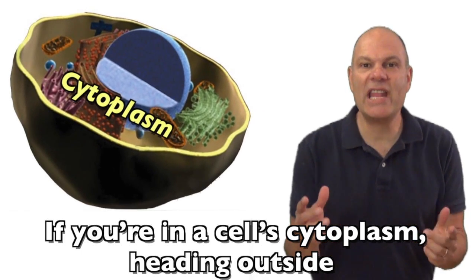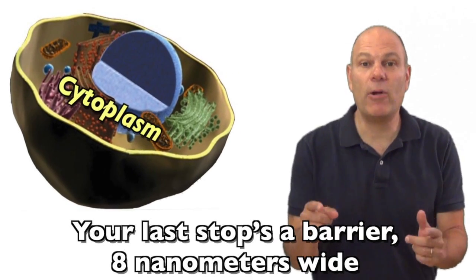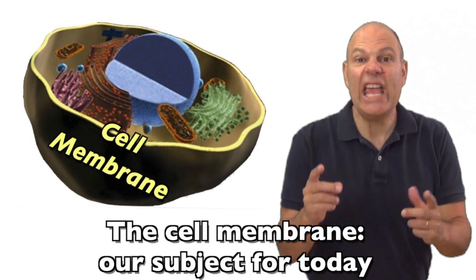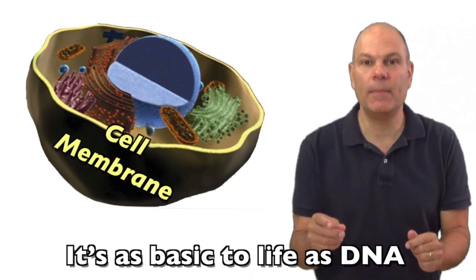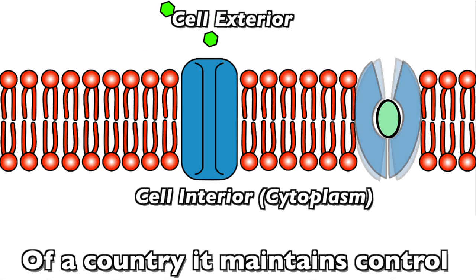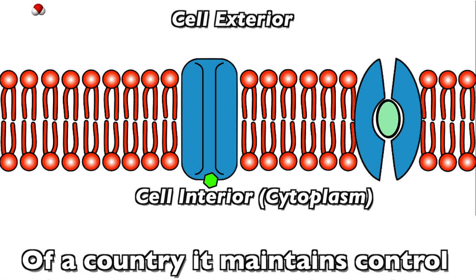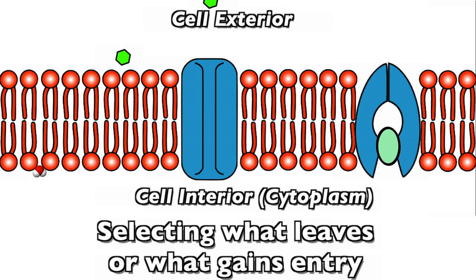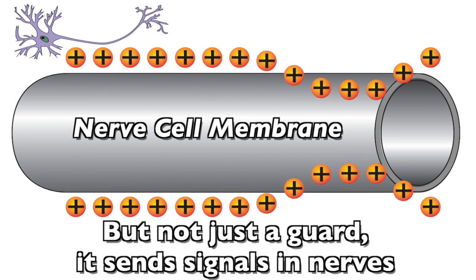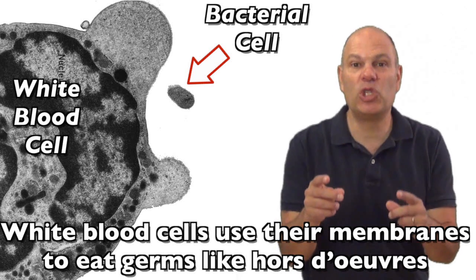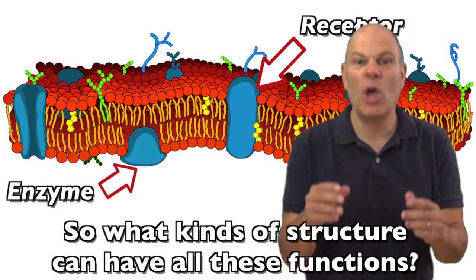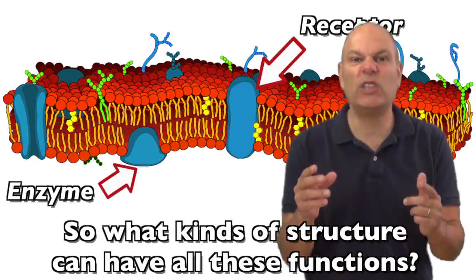If you're in a cell, cytoplasm heading outside, your last stop's a barrier 8 nanometers wide — the cell membrane, our subject for today. It's as basic to life as DNA. It's selectively permeable, like a border patrol of a country it maintains control, selecting what leaves or what gains entry. It's a guard, a watchman, patrolman, or sentry. But not just a guard — it sends signals and nerves. White blood cells use their membranes to eat germs like hors d'oeuvres. Membranes have receptors, enzymes, and junctions.